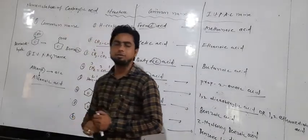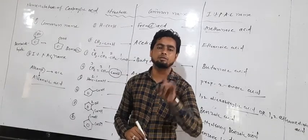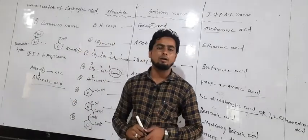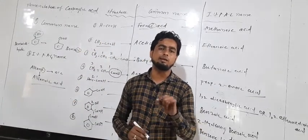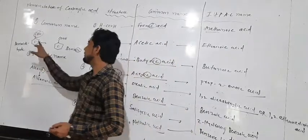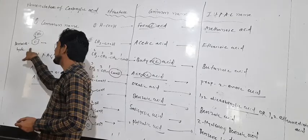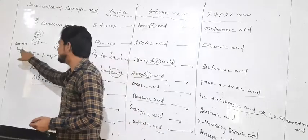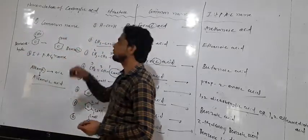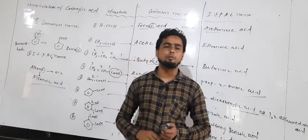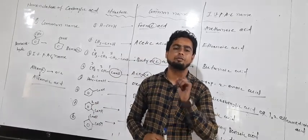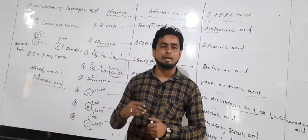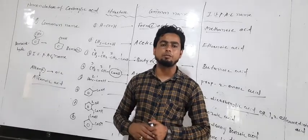In nomenclature, we take two rules: one is called the common name and second is the IUPAC name. For the common name of carboxylic acid, similar to aldehyde, we replace the aldehyde group with the -COOH group, which is called '-oic'. So benzaldehyde changes into benzoic acid. We use the suffix '-ic' and the last word 'acid' — for example, benzoic acid, acetic acid, and so on.